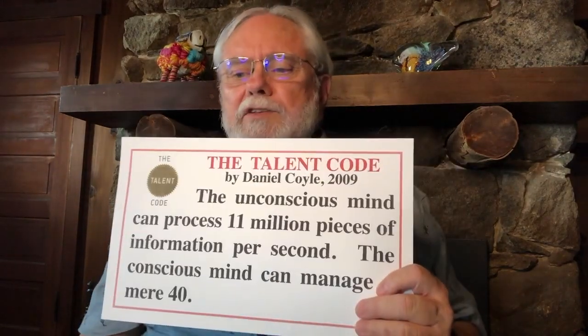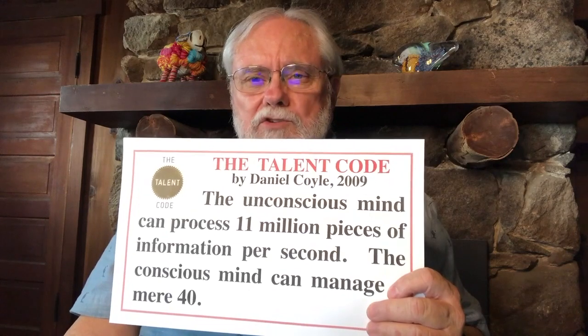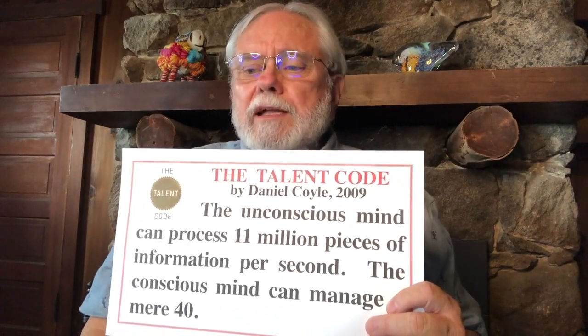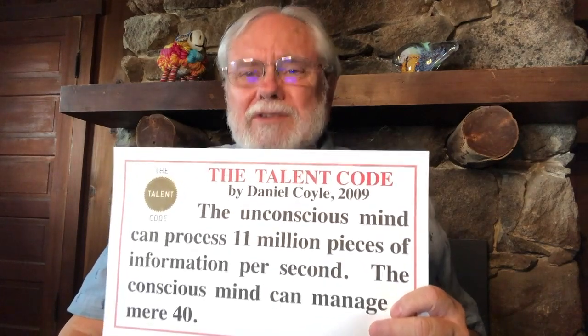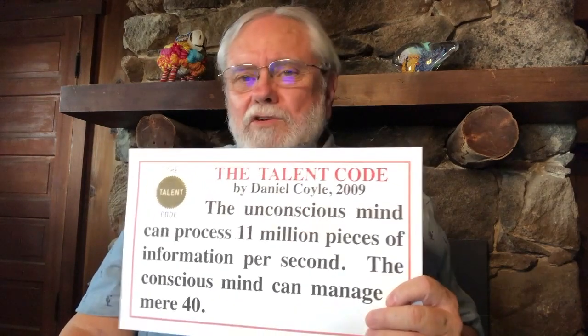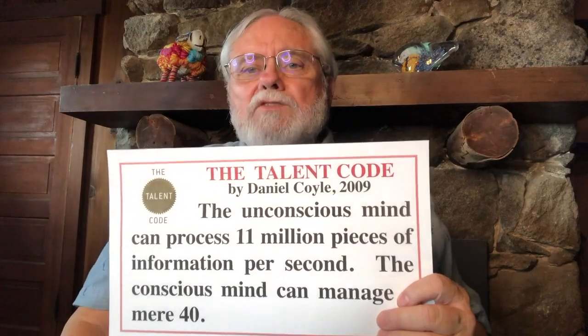As we look at these two memory systems, a book that came out in 2009 called The Talent Code by Daniel Coyle talks about them. He tells us that the unconscious mind is almost limitless — it can process 11 million pieces of information per second. The conscious mind, however, can only manage a mere 40 pieces per second. So the conscious mind is very limited in how much and what kind of information it can process.